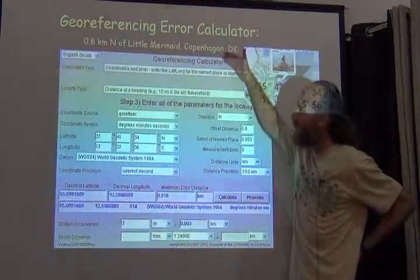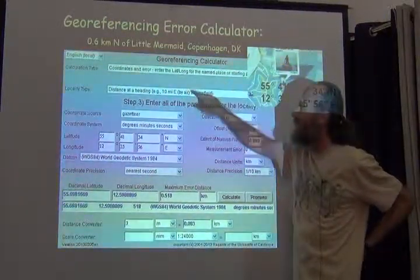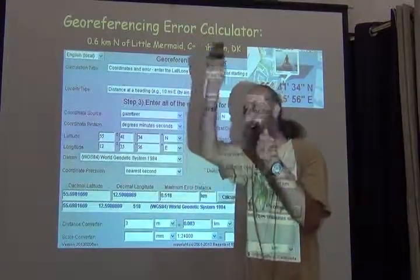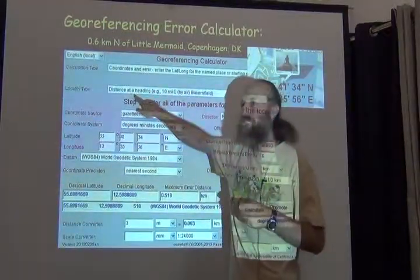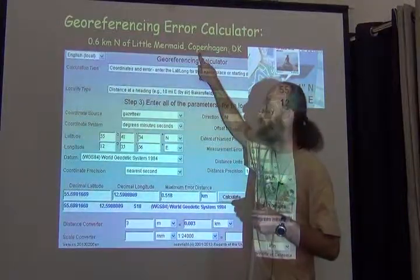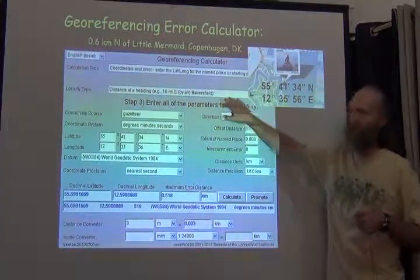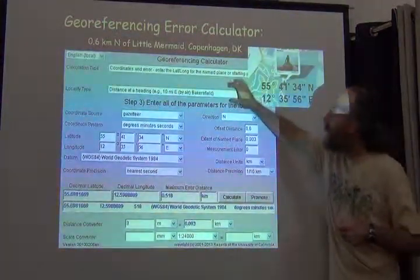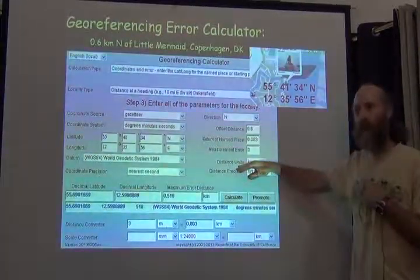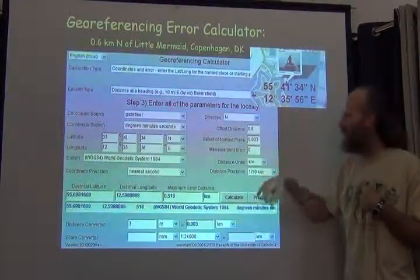The calculator works like a recipe. When you open it, none of this appears. Only this selection box appears. As soon as you make a selection, only this next box appears. In this case, what I've done is I've decided that the locality type, and you remember in the georeferencing quick reference guide all those types are listed. There's a named place only. There's also a distance at a heading. That's one of the categories. So in this case, my description is 0.6 kilometers north of the Little Mermaid. That fits this pattern of being a distance at a heading. Because the calculator is a recipe, as soon as I pick this box, everything else appears. That is, up to here, everything that I need to provide in order to make the calculation. And from here down to here, all the results of that calculation. And from here down to here, a couple of tools to help me figure out values that go in here.